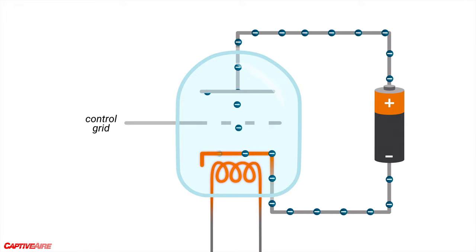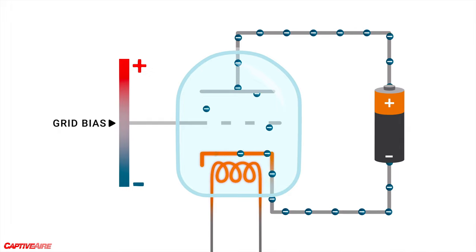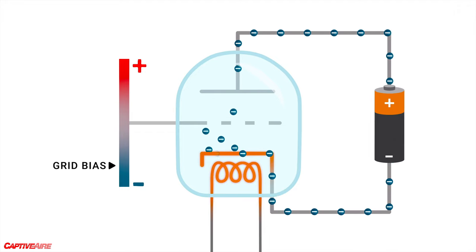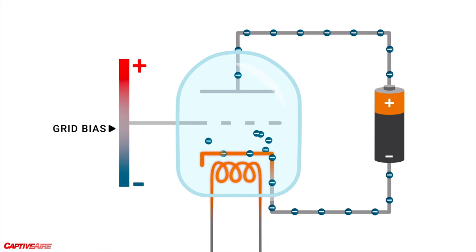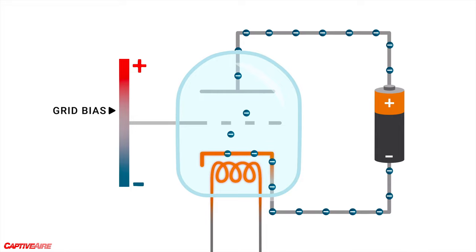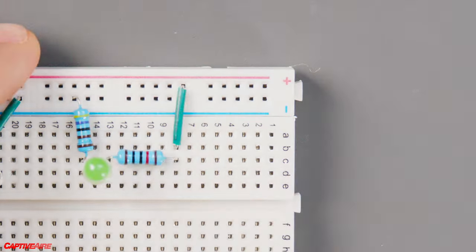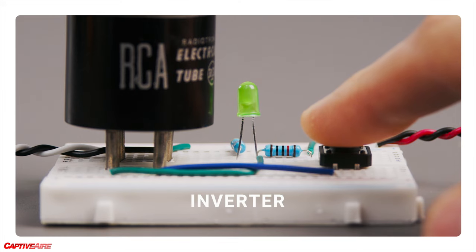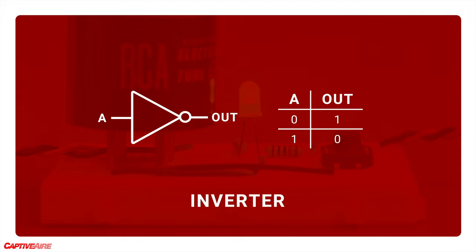We can add one more electrode called a grid to control the flow, by changing how positively or negatively charged the grid is. If it's negatively charged, the electrons leaving the heated cathode will hit a roadblock — like charges repel. Enough negative charge in the grid stops all current flow. When the grid is positively charged, even just a little bit, the electrons keep traveling across the gap, reestablishing current flow. I built this little inverter circuit, which takes one bit of information and flips it to be the opposite. That's why when I push the button, the light turns off. Here's the truth table for it — it's as simple as it gets.